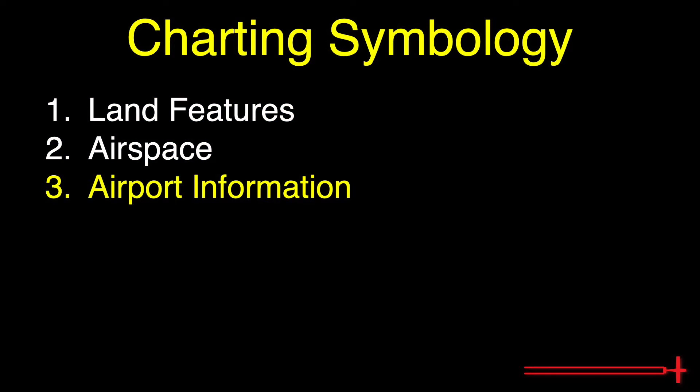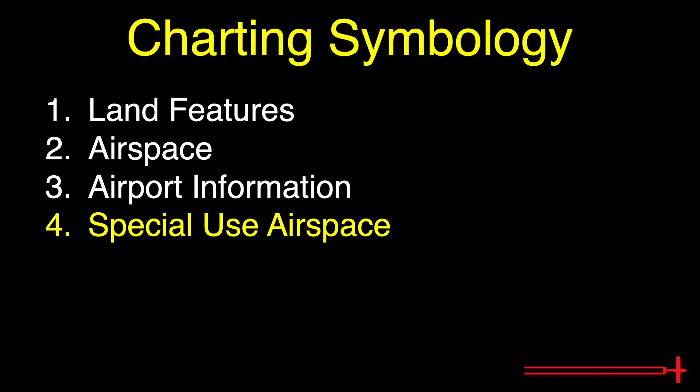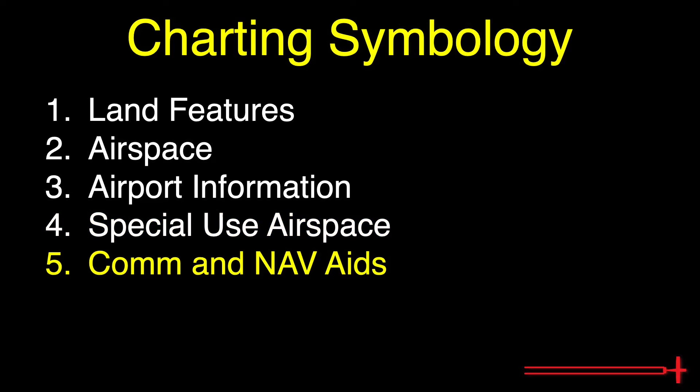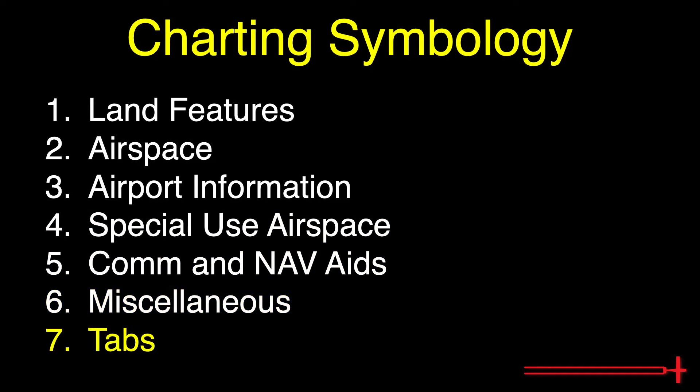The seven sections are: land features, airspace, airport information, special use airspace, COM and NAV aids, miscellaneous information, and lastly the tabs. We will begin with land features.